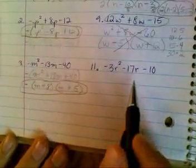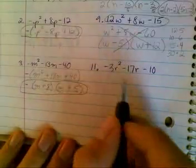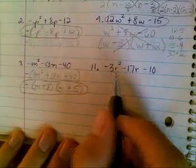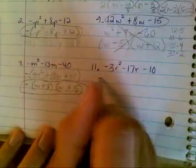So let's skip on to number 11. We do have a greatest common factor here. It's a negative sign.